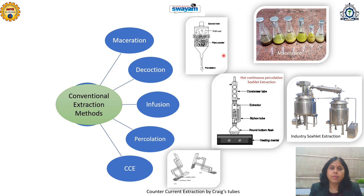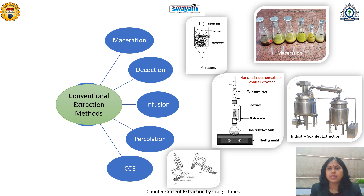Both maceration and percolation can be utilized at commercial level. Maceration also has modifications like kinetic maceration (with shaking) or re-maceration, where the plant material is divided into four or five parts, separately macerated and then mixed together to achieve exhaustive extraction of the phytochemicals.